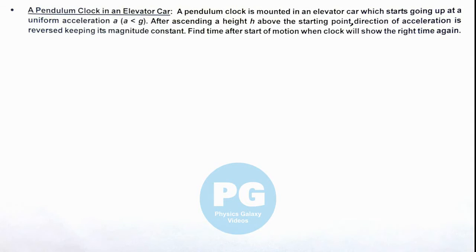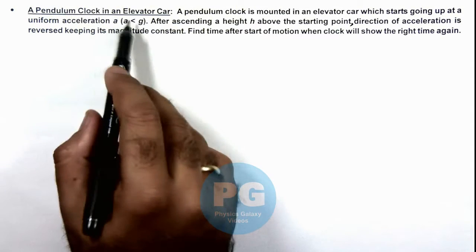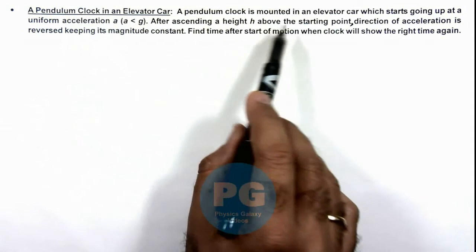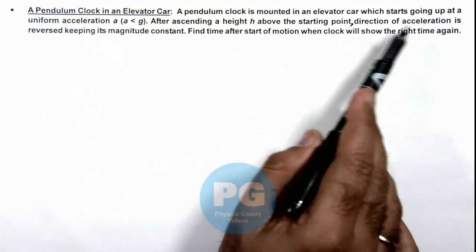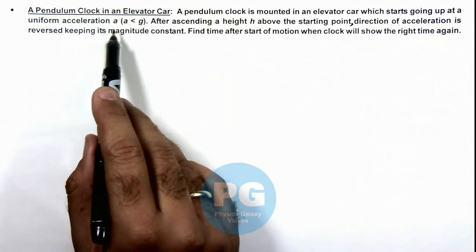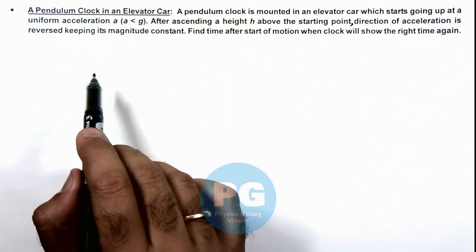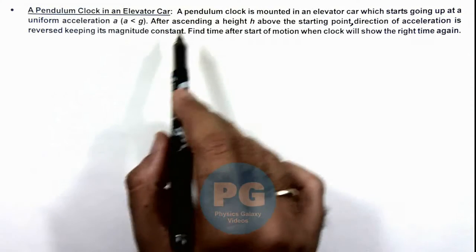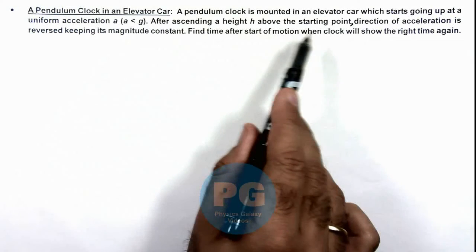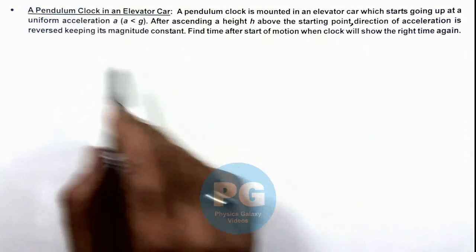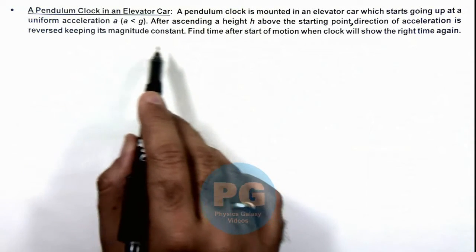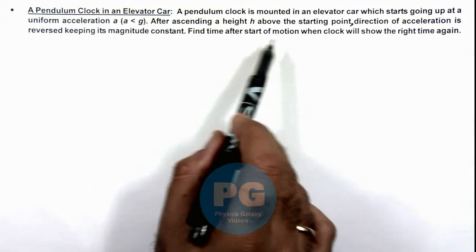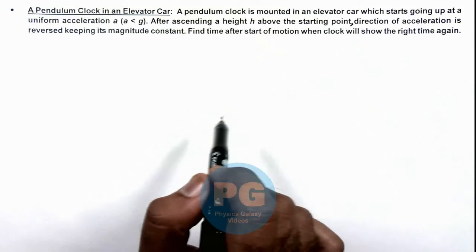In this illustration we'll discuss a pendulum clock in an elevator car. A pendulum clock is mounted in an elevator car which starts going up at a uniform acceleration ay, where ay is less than g, the acceleration due to gravity. After ascending a height h above the starting point, the direction of acceleration is reversed keeping its magnitude constant. We are required to find the time after start of motion when the clock will show the right time again.